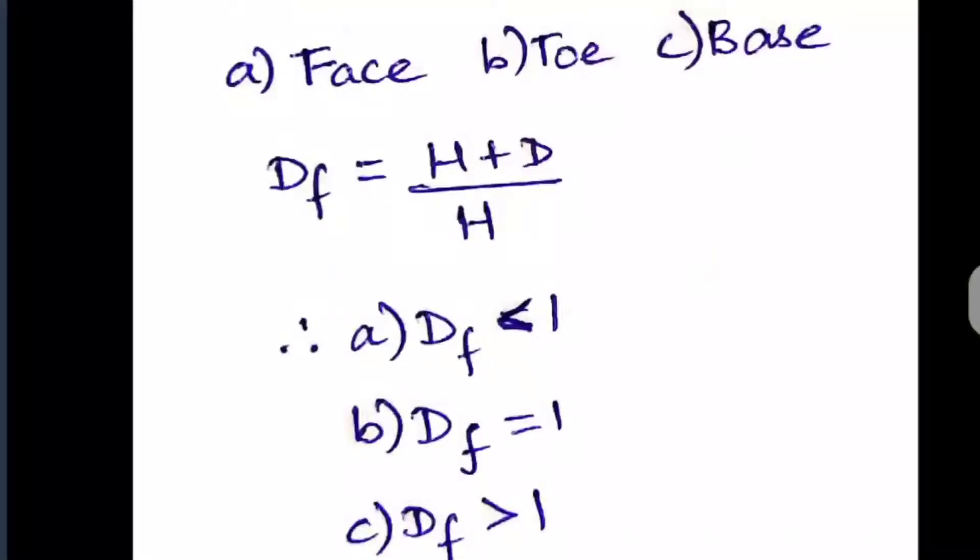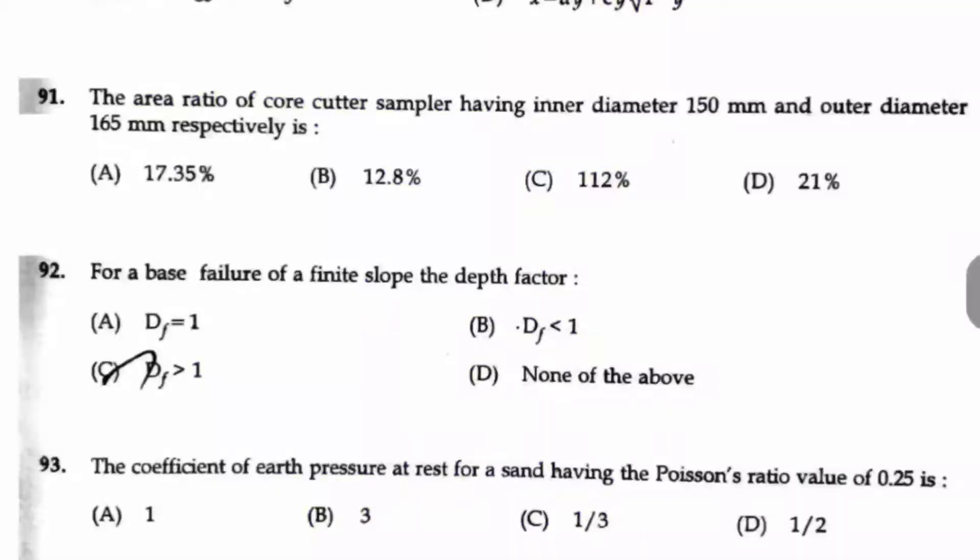And if it is equal to 1 correctly up to the toe and it is a toe failure, and if it is greater than 1 means it is a base failure. So here option C is the right answer.